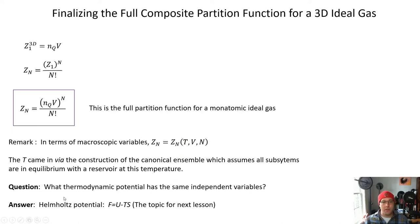So here's a question. What thermodynamic potential has the same independent variables as Z_N, namely T, V, and N? Maybe you have memorized this by now. Maybe you've done enough homework. I don't know. It's the Helmholtz potential F, which is U minus TS. And so the topic for the next lesson is going to be, how do we relate the partition function Z_N to the Helmholtz potential?